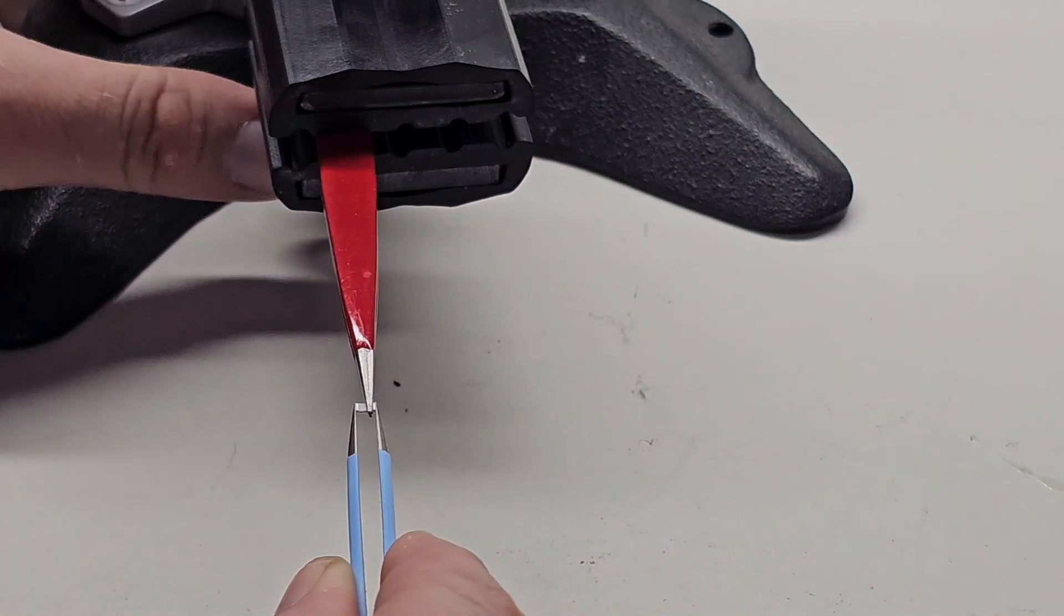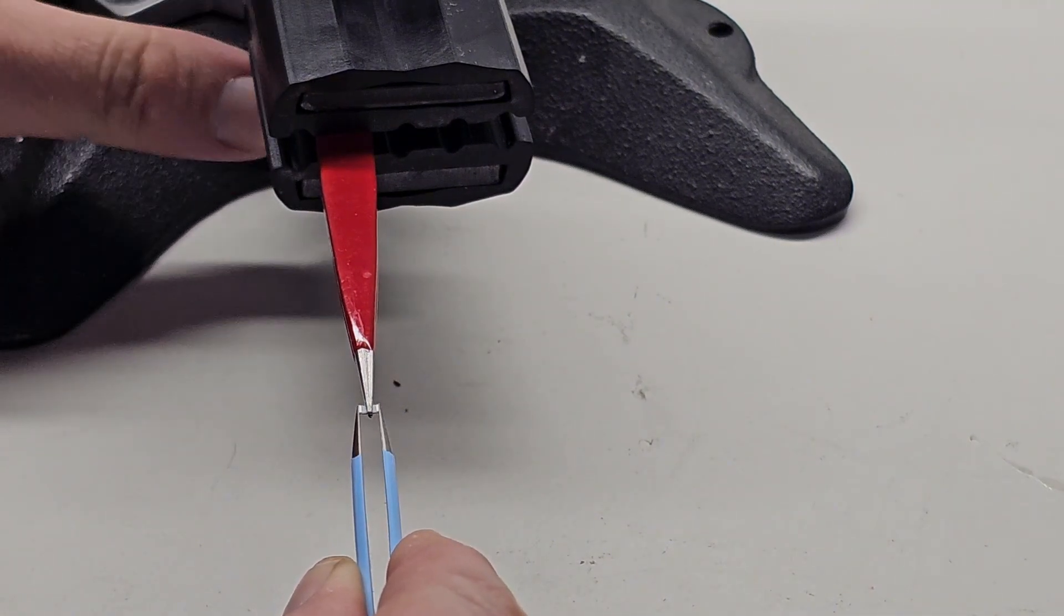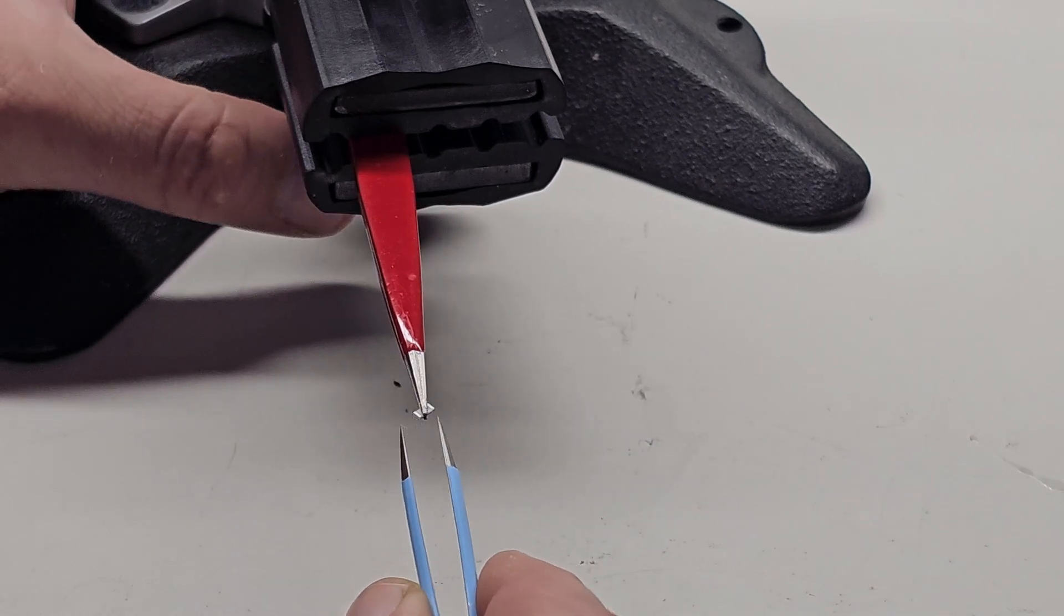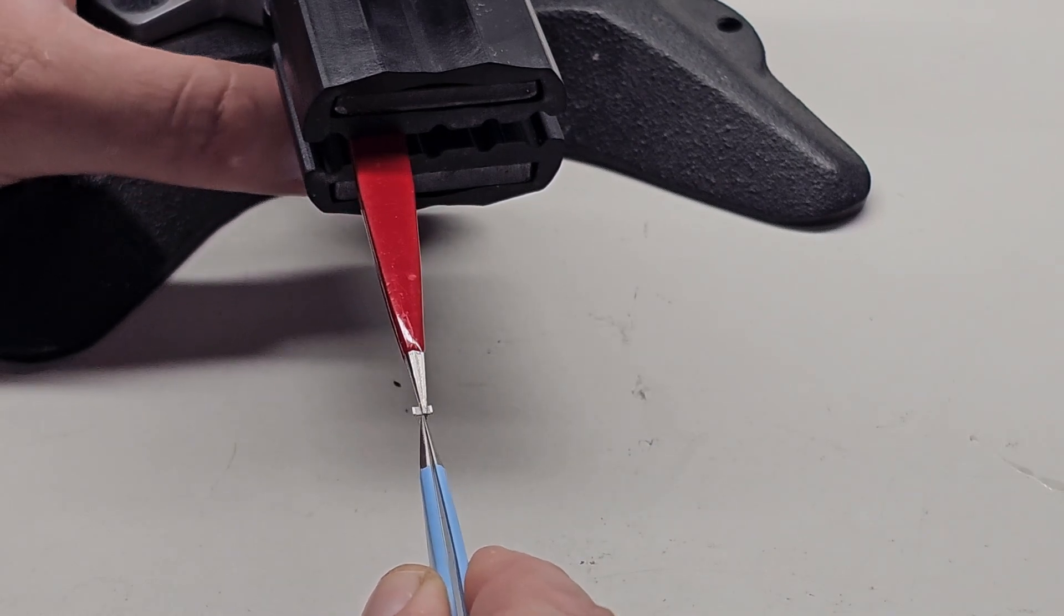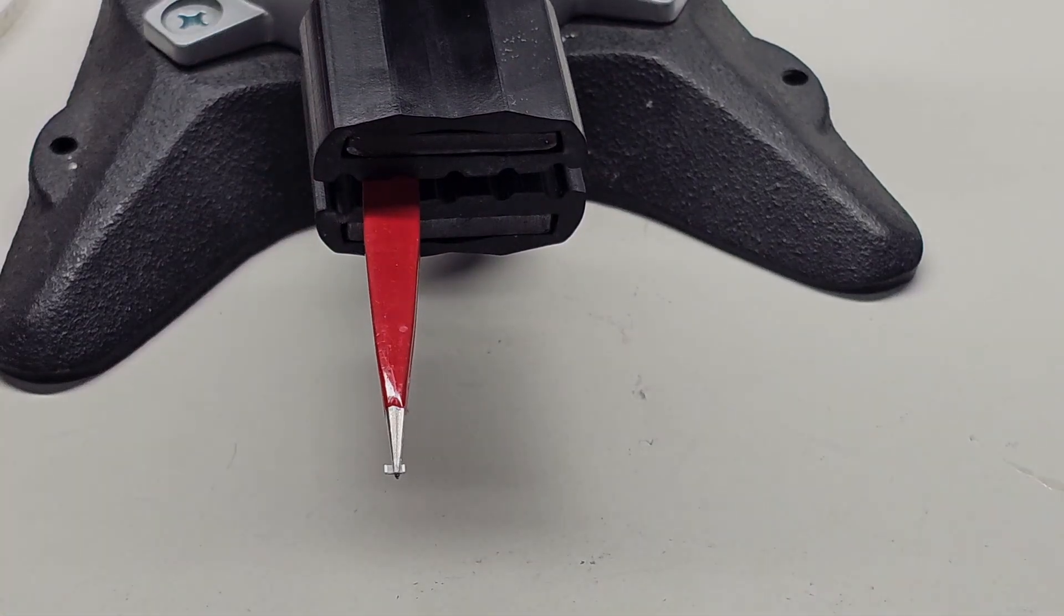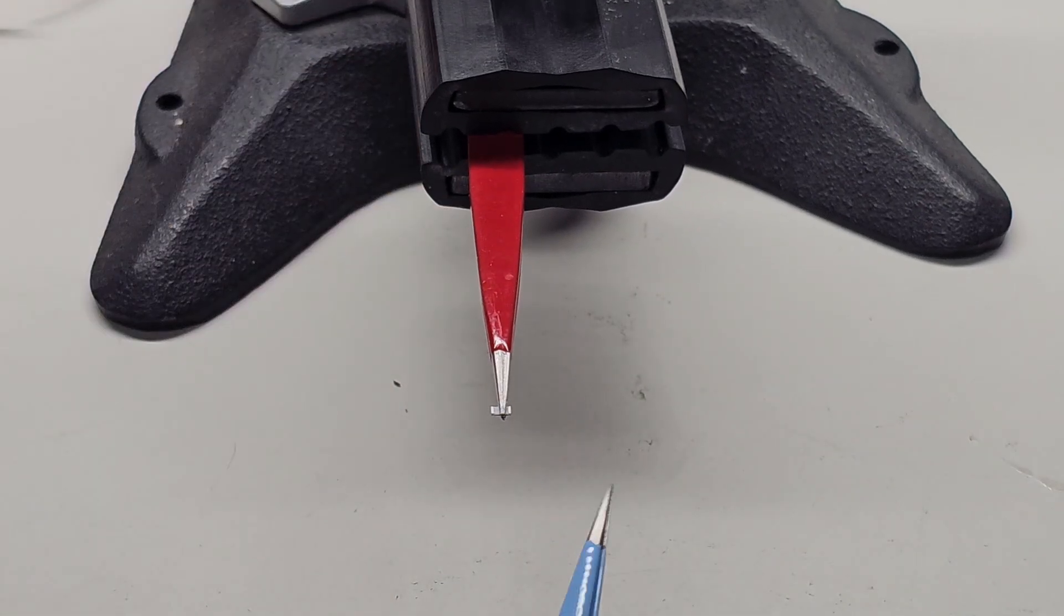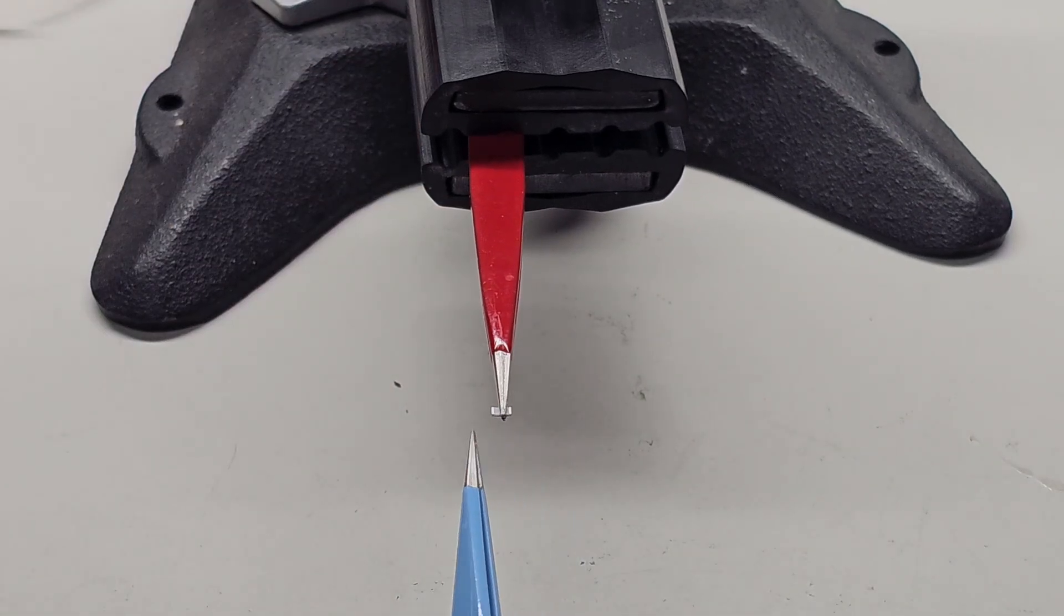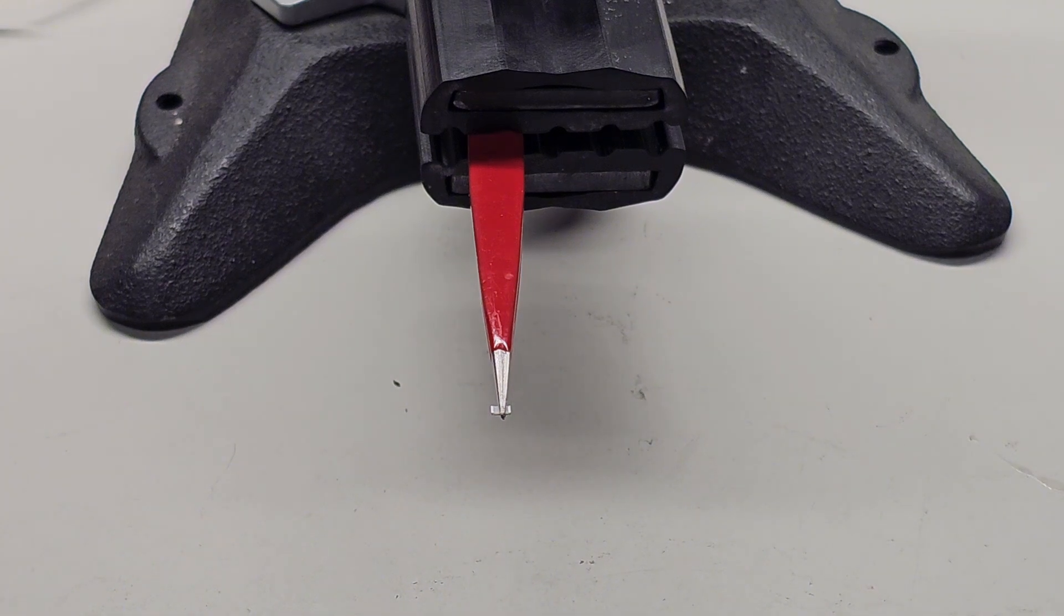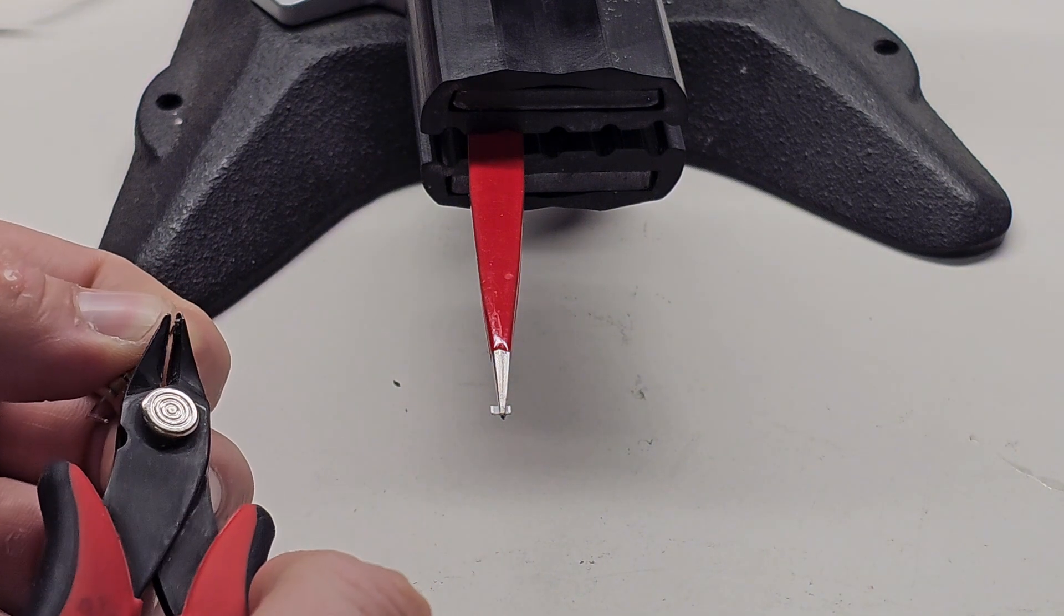And then scoot it over and then tighten the jaws back up. There we are right there. So there we go. So my plan is we're going to solder legs on each end of this resistor. So let's get these legs clipped off of this guy right here.